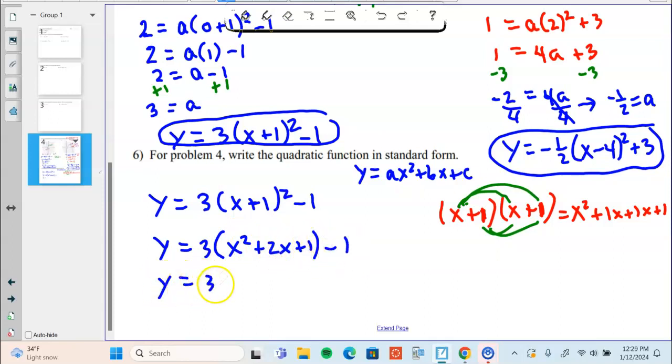So my x plus one squared is x squared plus 2x plus one. We're going to distribute the three, and then we'll combine like terms, and we have our standard form and we are finished.